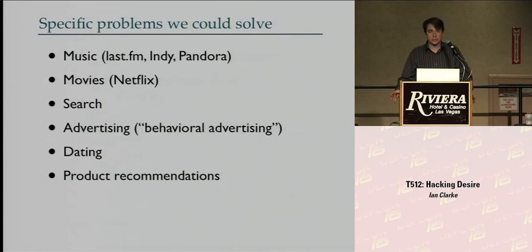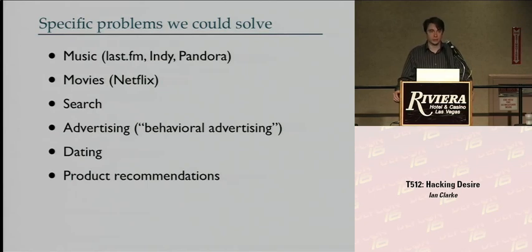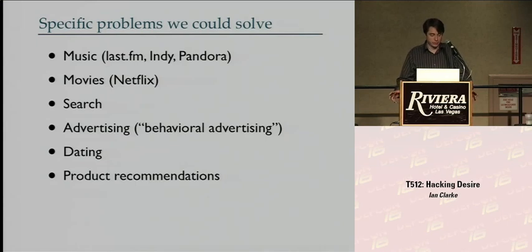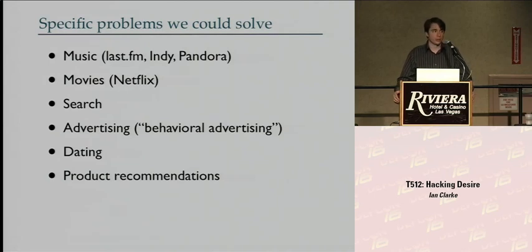What can you do with this? We see a lot of examples of recommendation engines in use on the internet today. You can use it to figure out what kind of music people like — typically people have a lot of trouble articulating exactly what their musical tastes are. Most of you are familiar with Netflix; that's one of the most prominent uses of collaborative filtering online — they use it to recommend movies. This approach can also be used to recommend search results as an alternative to page rank, tailored to you specifically based upon your past behavior.